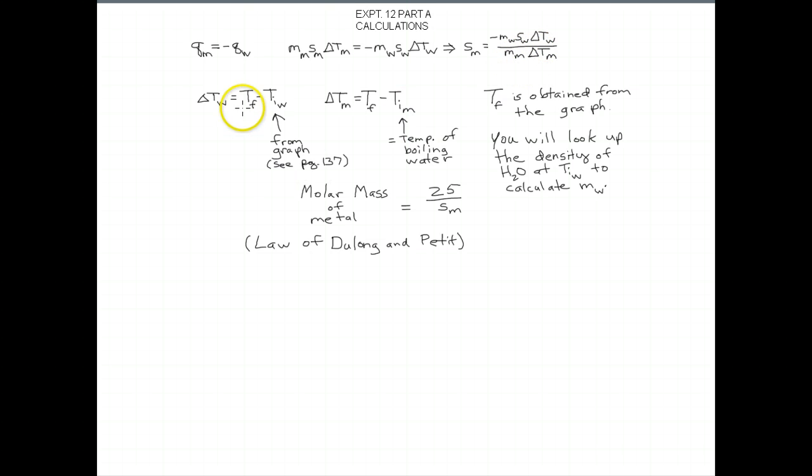Delta T of the water is the final temperature, remember that's where the green line touched the red line, minus the initial temperature of the water, that's where the blue line touched the red line. And the delta T of the metal is the final temperature, again, same one as over here, where the green line touched the red line, minus the initial temperature of the metal. That was the temperature of the boiling water.